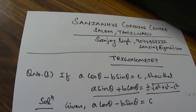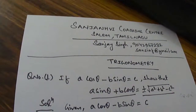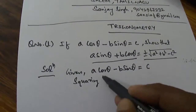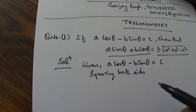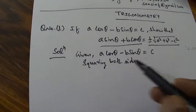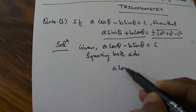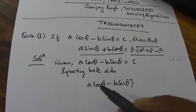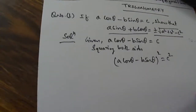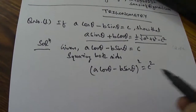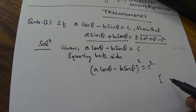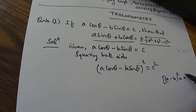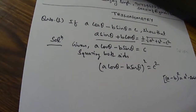So what we will be going for? We will be going for squaring both sides. So after squaring, A cos θ minus B sin θ whole square is equal to C squared. Now, if you are going for squaring, we will be using the algebraic formula. The formula is A minus B whole square, which is A squared minus 2AB plus B squared.